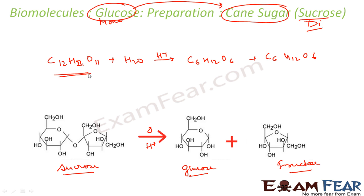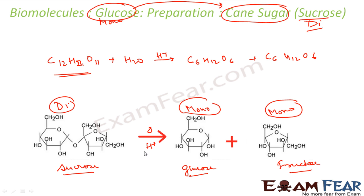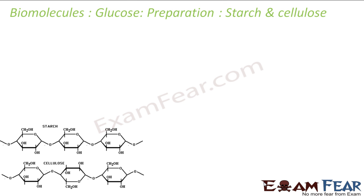Both glucose and fructose have the same molecular formula, C6H12O6, but different structural formulas. This reaction is a hydrolysis of sucrose, yielding two units of monosaccharides — which confirms that sucrose is a disaccharide. Glucose and fructose are obtained in equal quantities when sucrose is boiled with dilute sulfuric acid or hydrochloric acid in alcoholic solution.